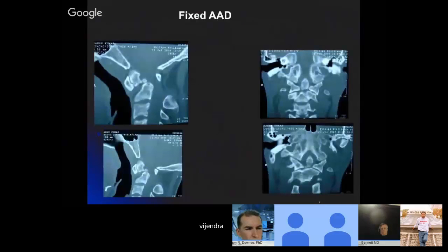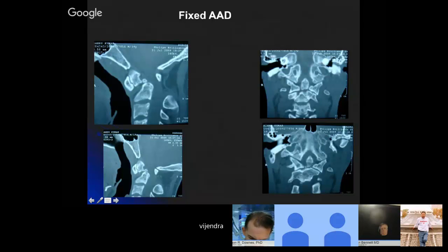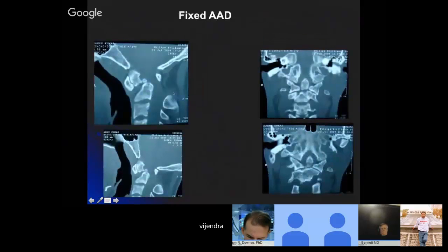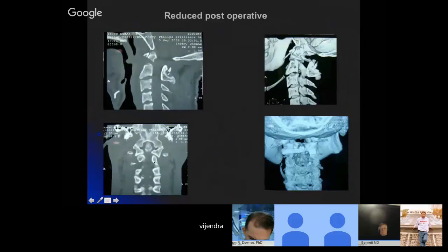Another similar case: 10-year-old boy, post-traumatic dislocation. I thought I would be able to reduce it as the joints were free with coronal joint visible, but there was side-to-side dislocation also. This could not be reduced by posterior approach, so again we went transoral, removed the offending element, and it is completely reduced and aligned. We removed just that portion of bone and it has moved forward, with side-to-side dislocation completely reduced.